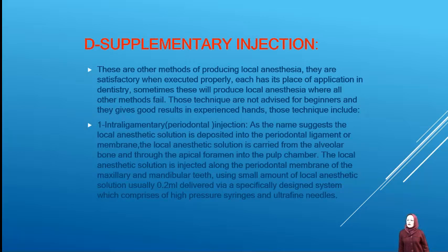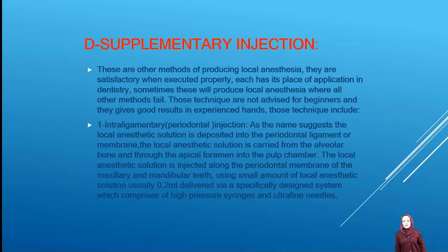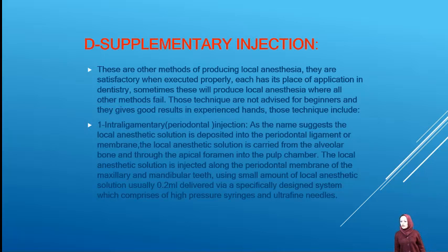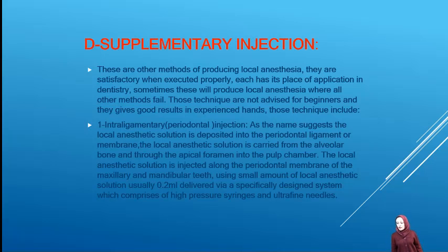Supplementary injections: these are other methods of inducing local anesthesia, satisfactory when executed properly. Each has its place in dentistry, and sometimes these will produce local anesthesia where all other methods fail. These techniques are not advised for beginners and give good results in experienced hands. They include intraligamentary or periodontal injection: the local anesthetic solution is deposited into the periodontal ligament and is carried through the alveolar bone and through the apical foramen to the pulp chamber. The solution is injected alongside the periodontal membrane using a small amount, usually 0.2 ml, delivered via a specialized high-pressure syringe and ultrafine needles.